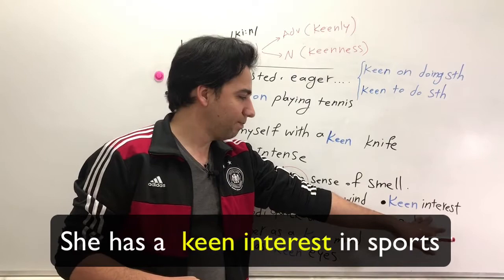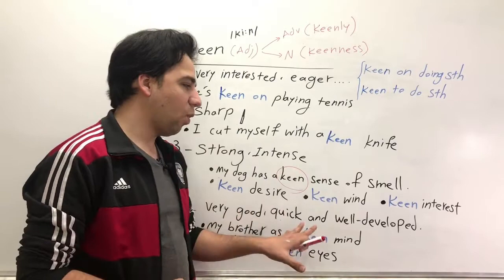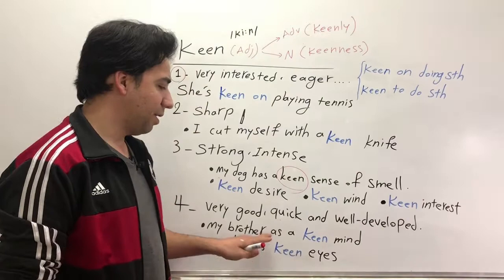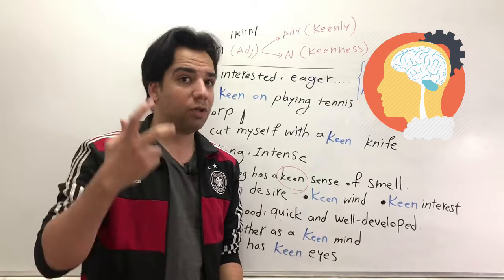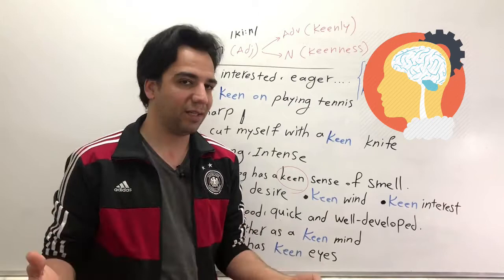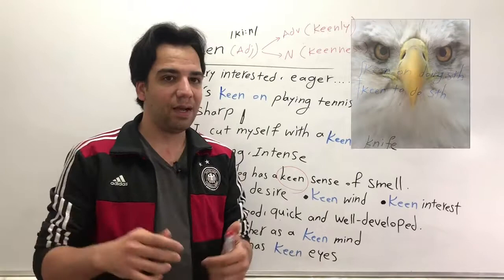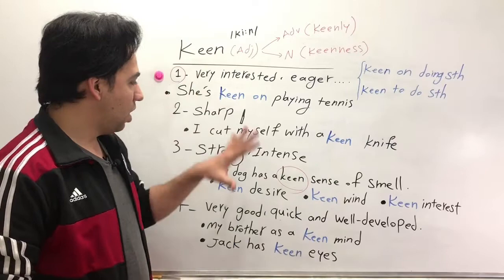So the last meaning of keen means very good, quick, and well developed. For example, my brother has a keen mind, which means he has a very good mind—he's very intelligent, he can understand everything very quickly. Or Jack has keen eyes—very good eyes, he can see everything very well. So these are four great meanings of keen.